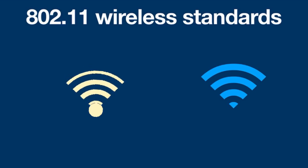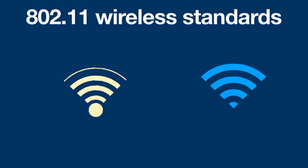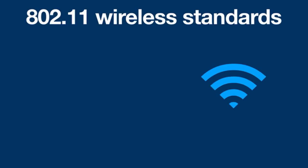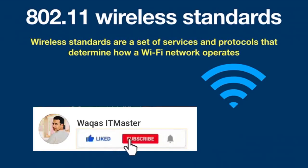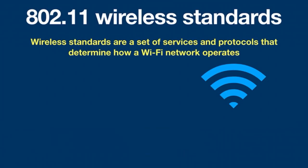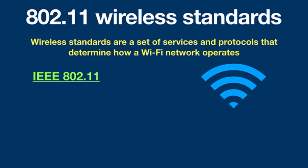There are many different types of Wi-Fi standards. Routers, laptops, tablets, mobiles, and smart home devices all use different wireless standards to connect to the internet. Wireless standards are a set of services and protocols that determine how a Wi-Fi network operates. The most common set of wireless standards is the IEEE 802.11, and its different versions came during different years. Let's see some of the important features of each version briefly.